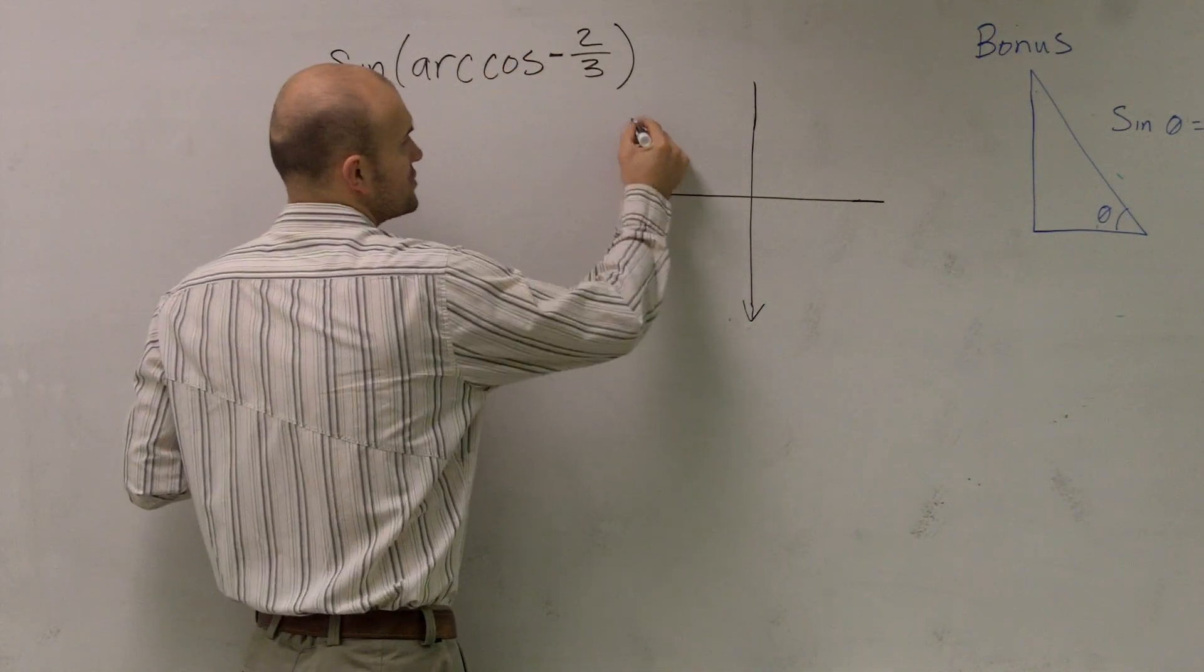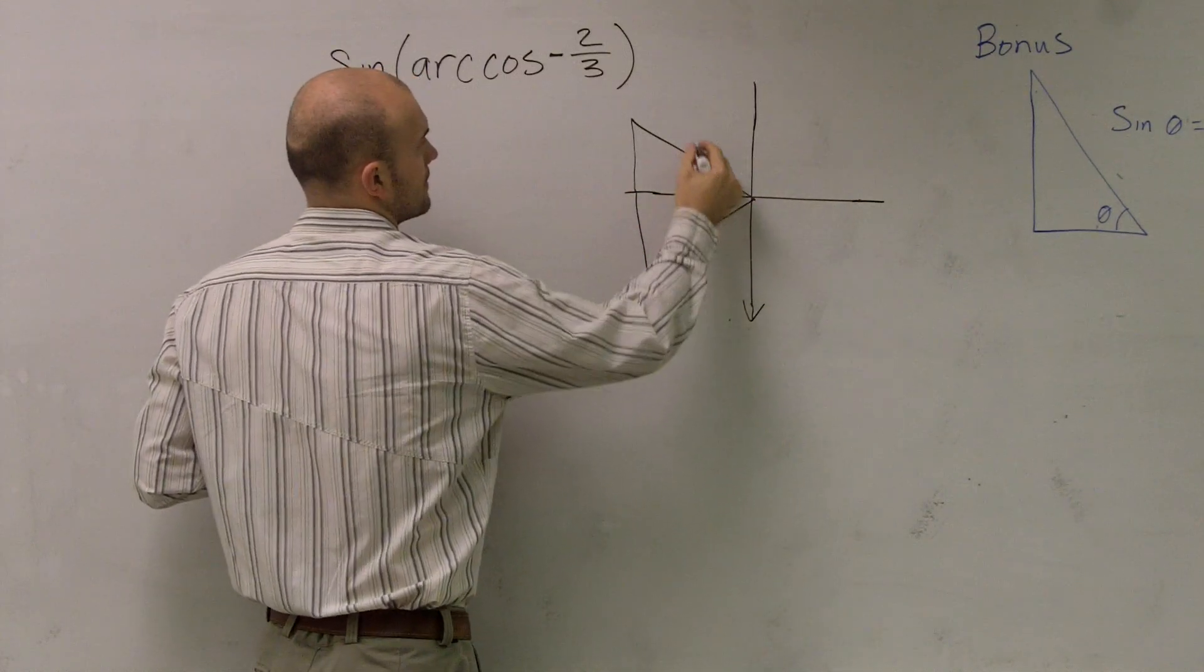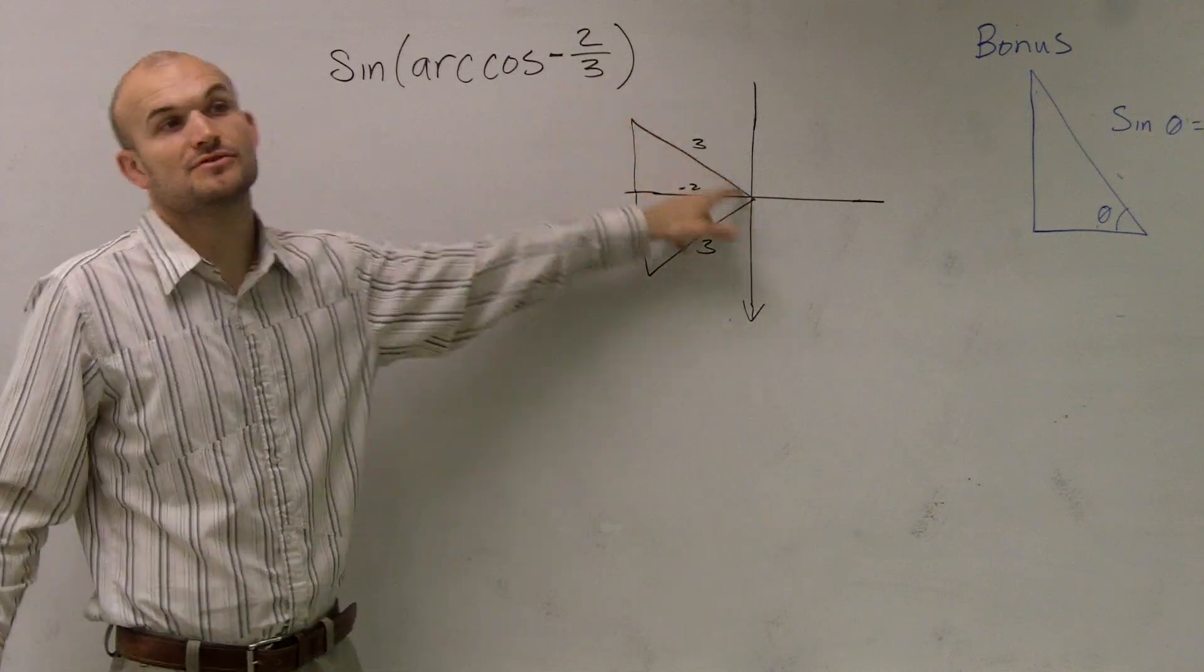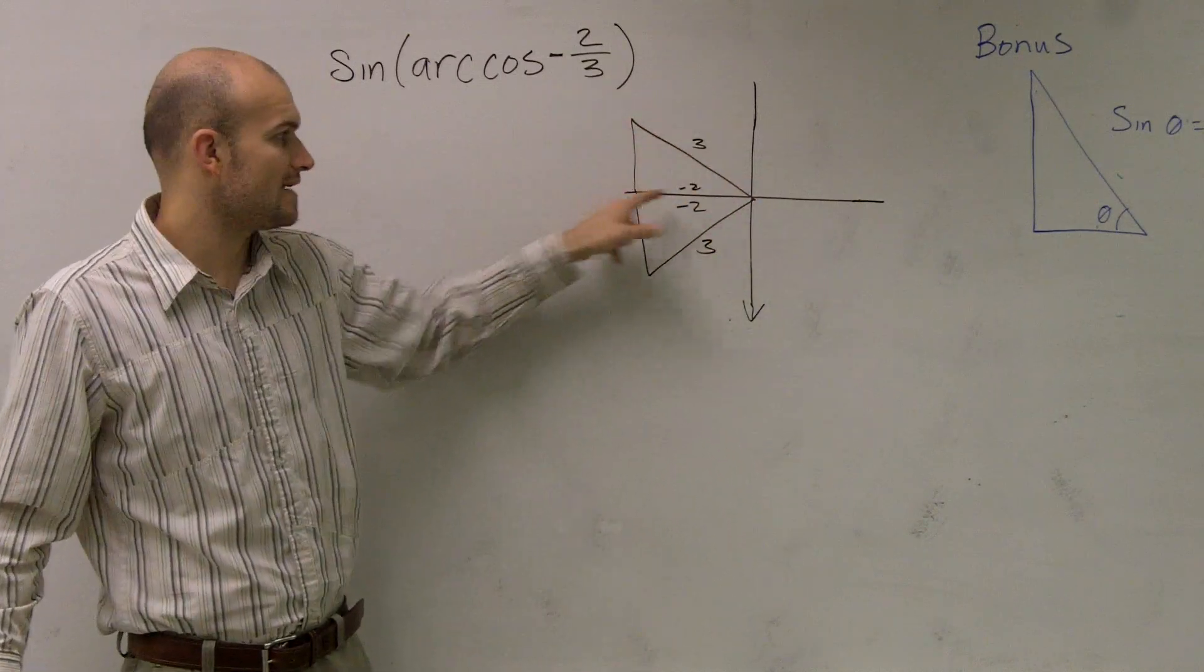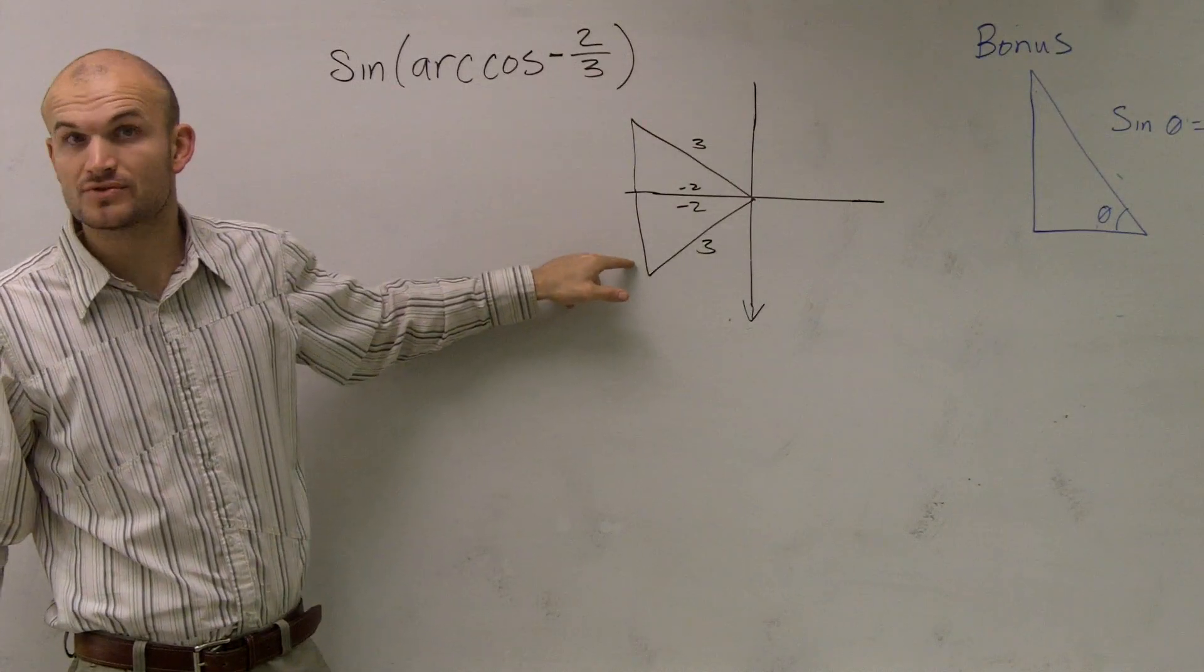So therefore, I can have two triangles. So I can either have this be negative 2 and my hypotenuse is always 3. Or I can be negative 2 and my hypotenuse is down 3. So I can either have a positive or a negative y value pretty much with there.